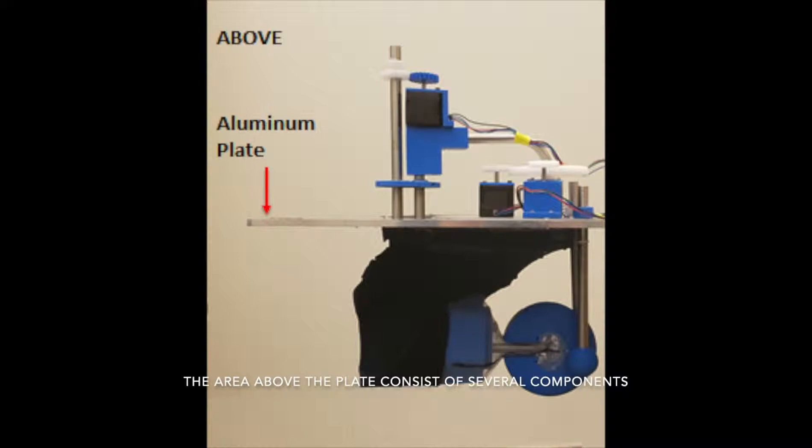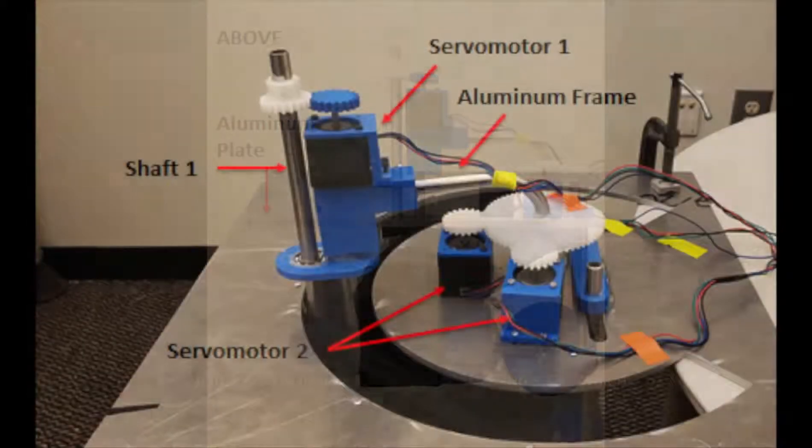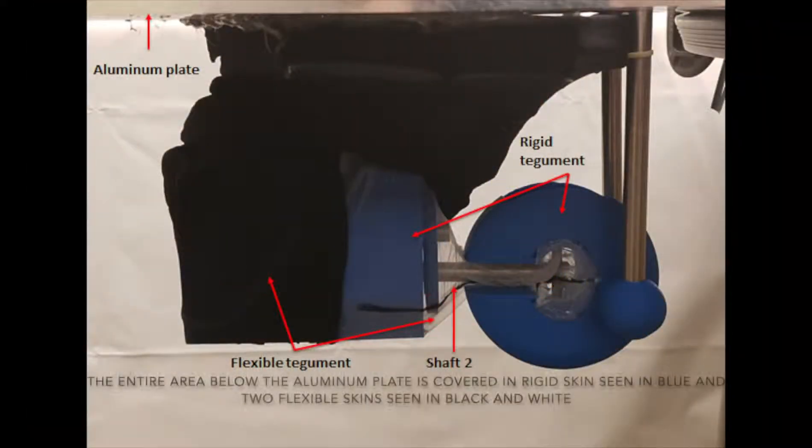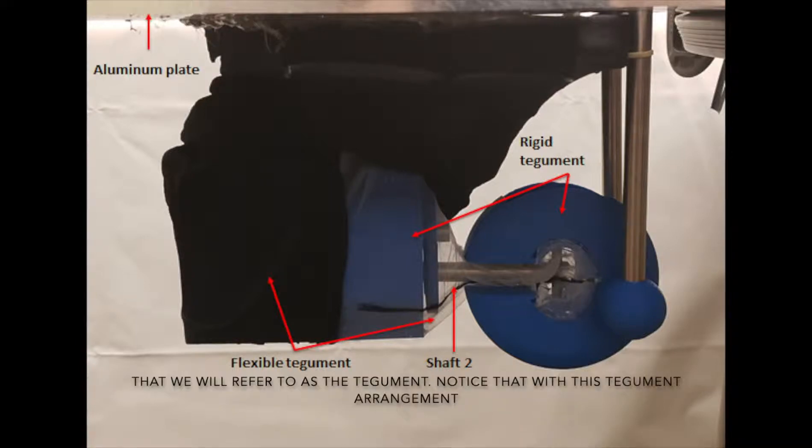The area above the aluminum plate consists of several components such as servo motors, an aluminum frame, and a rotating shaft, which lie inside the vehicle. The entire area below the aluminum plate is covered in rigid skin, seen in blue, and two flexible skins, seen in black and white, that we would refer to as the Tegumint. Notice that with this Tegumint arrangement, the connected inside of the vehicle includes the inside of the wheel.